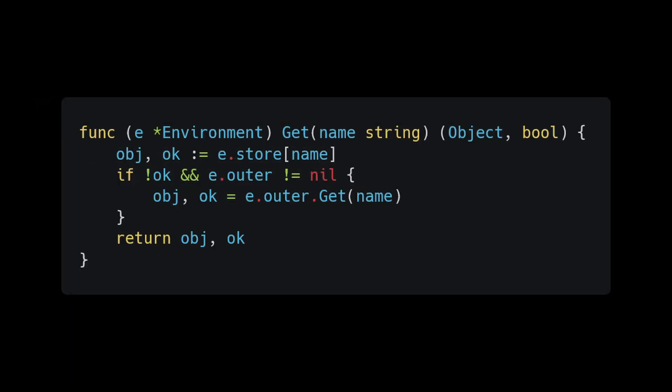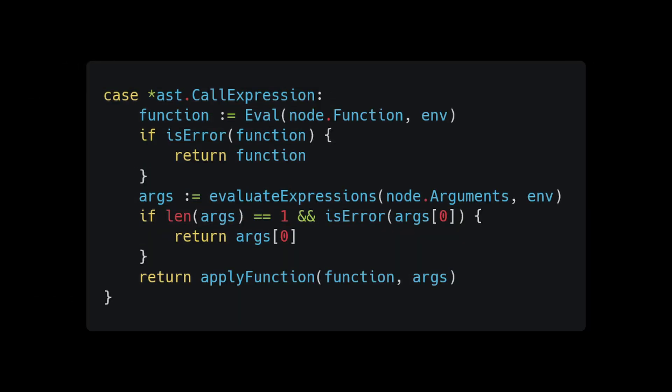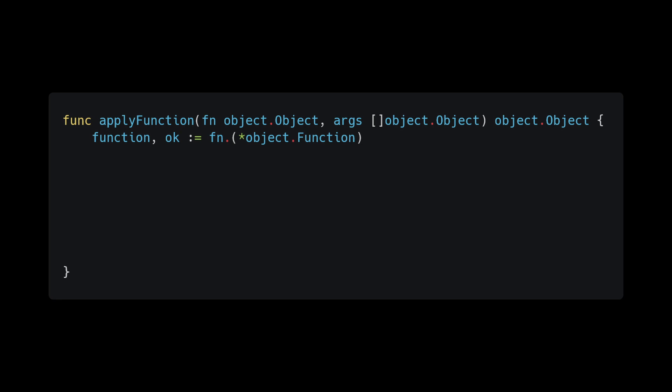Spruce up our get method so we can retrieve variables from outer layers too — update get to continuously check the outer environment until we either find the variable or hit environment bedrock, using a simple for loop. Back in the evaluator package, as the last step of our call expression case, return the result of an apply_function method. The apply_function method accepts the function and the evaluated arguments, creates a function variable, and does a quick check on the result.